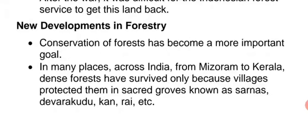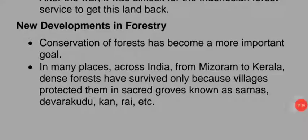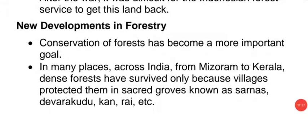Conservation of forest has become a more important goal in new developments in forestry. In many places across India, from Mizoram to Kerala, dense forests have survived only because villages protected them in sacred groves known as sarnas, devrakudu, kan, rai, and other local names.